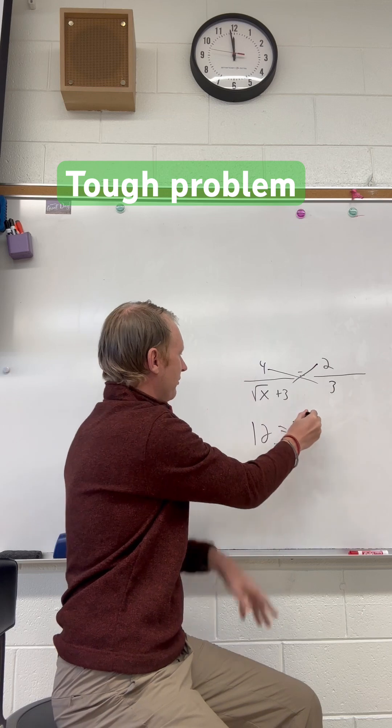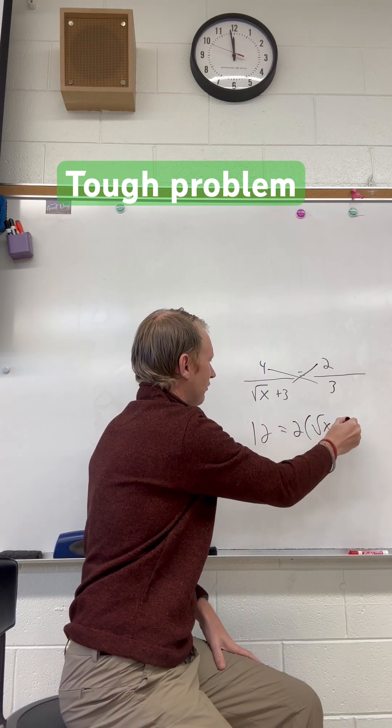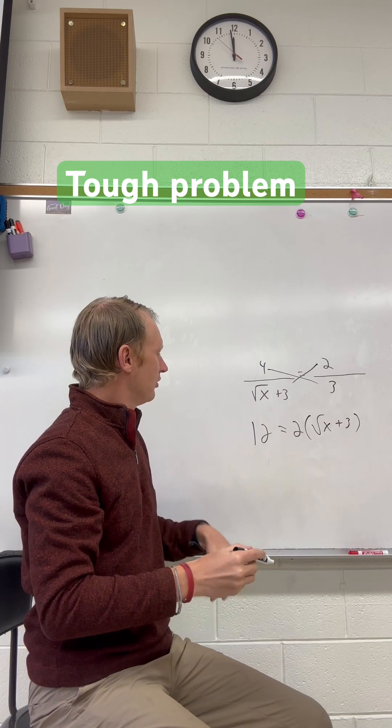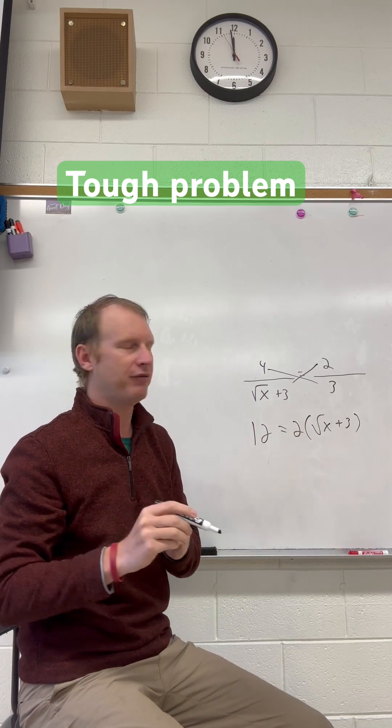Make sure to put this entire bottom in a parenthesis, right? Because it's the entire quantity, square root x plus 3. Then we can actually distribute if we wanted to, but we don't have to.